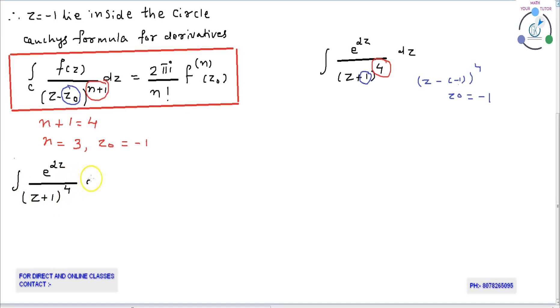Then, integral e raised to 2z by (z plus 1) raised to 4 dz equals 2 pi i by 3 factorial times the third derivative of f(z) at minus 1.